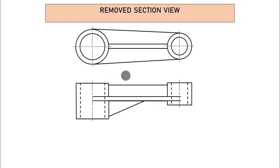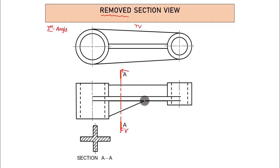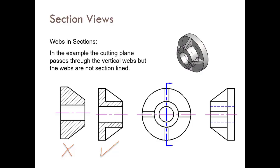If a part has two different cross-sections, you need to add two removed or revolved sections accordingly. Label them: the cutting plane lines are labeled A-A and B-B, and below each removed section write 'Section A-A' and 'Section B-B'. You can continue with C-C, D-D, and so on. Always label sections to add clarity for the person reading the drawing.